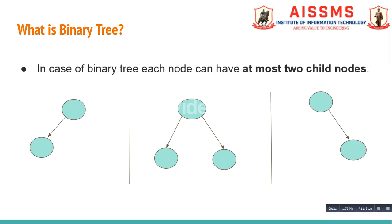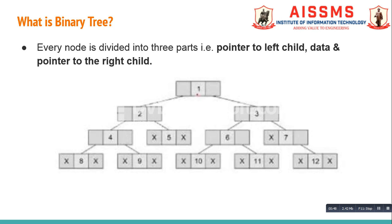In order to understand the concept of threaded binary tree, first of all we need to know what is a binary tree. In case of a binary tree, each node can have at most two child nodes. A node in the binary tree may have only a left child node, only a right child node, both left and right child nodes, or sometimes no child nodes at all.